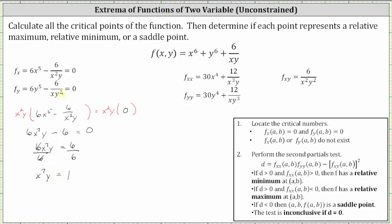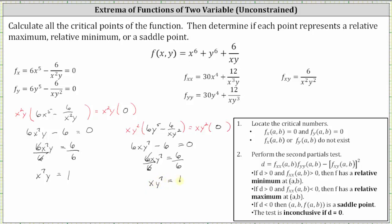Multiplying the second equation by x y squared and simplifying gives x y to the seventh equals one. So the system reduces to x to the seventh y equals one and x y to the seventh equals one. Solving by inspection, both equations are true when x equals one and y equals one. So one critical point is (1, 1, f(1,1)).